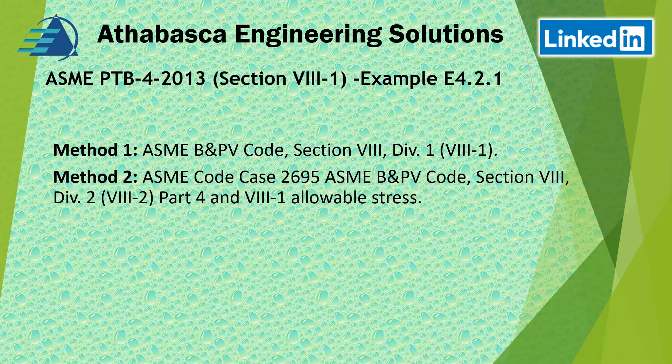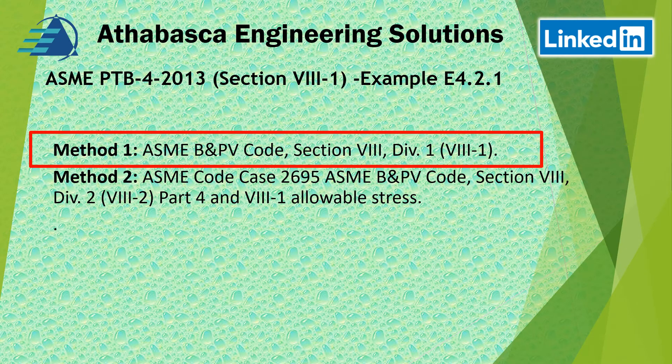ASME allows a couple of different methods. The first method is straight from Section 8, Division 1, utilizing UG, UW, and so on — the procedures built within Section 8, Division 1, which is where 99% of the time you'll end up. Method 2 is an alternative utilizing code case 2695, which allows you to use Division 2, Part 4 — designed by rules — but you need to use Section 8, Division 1 allowable stresses. It's very specific to the circumferential weld between the hemispherical head and the shell.